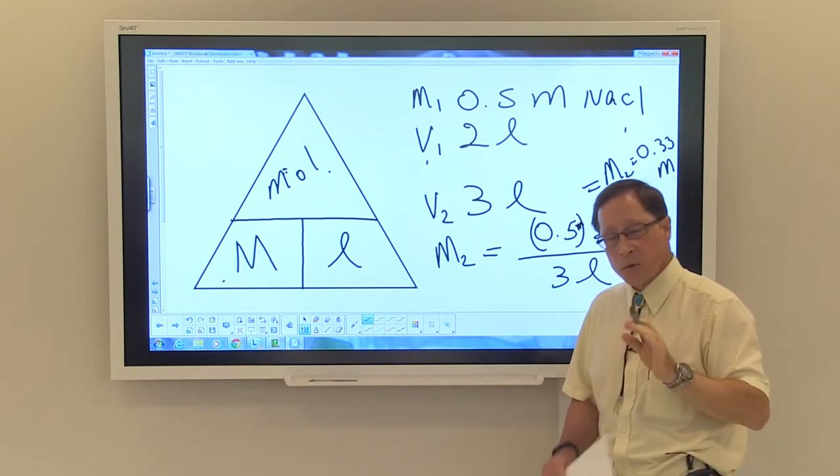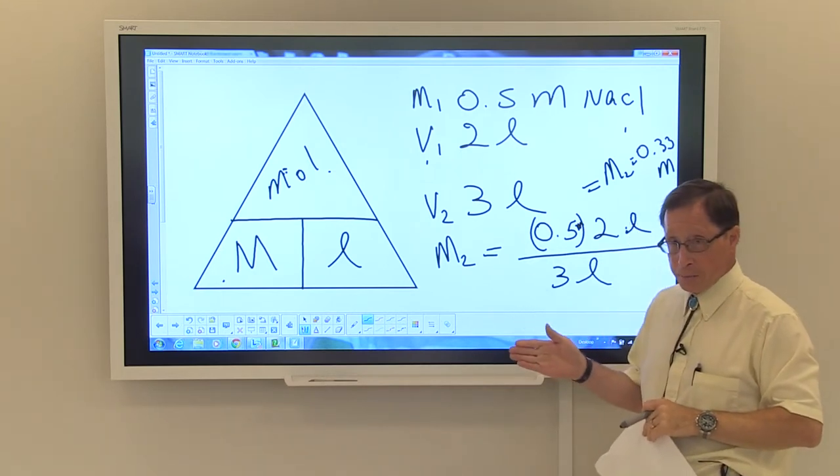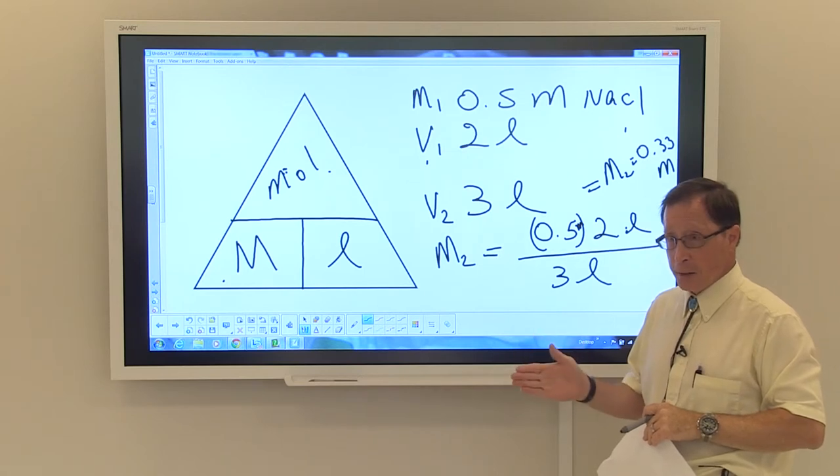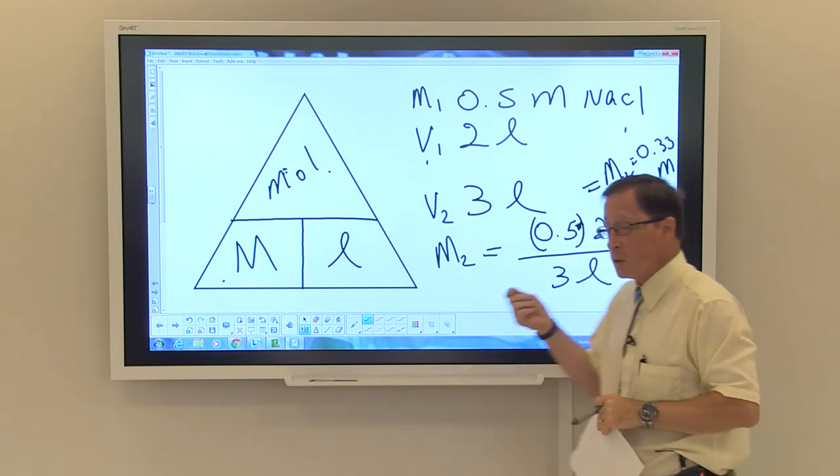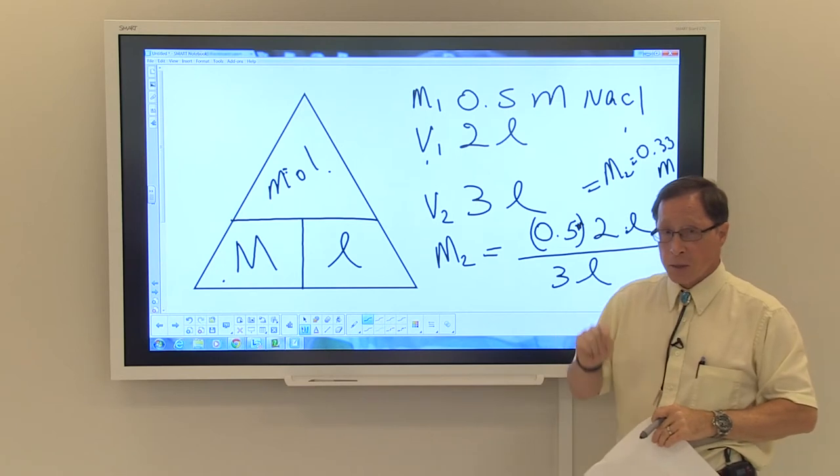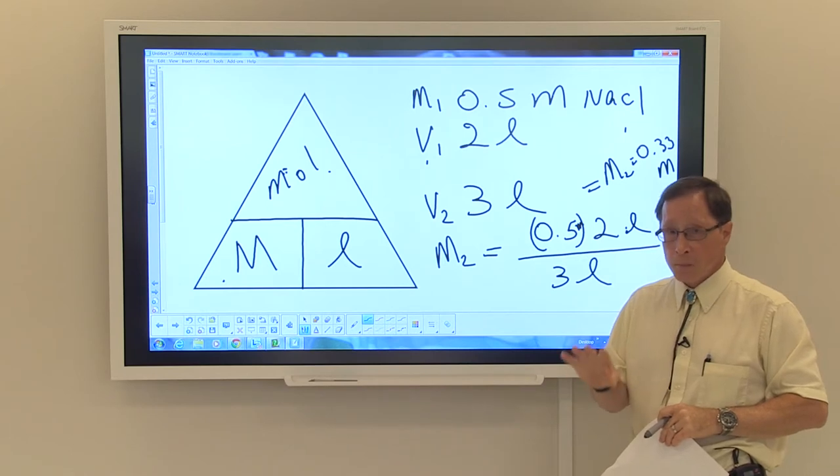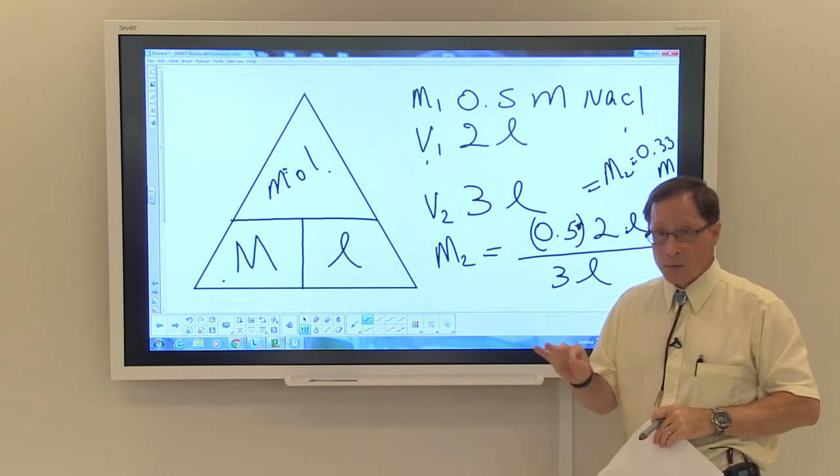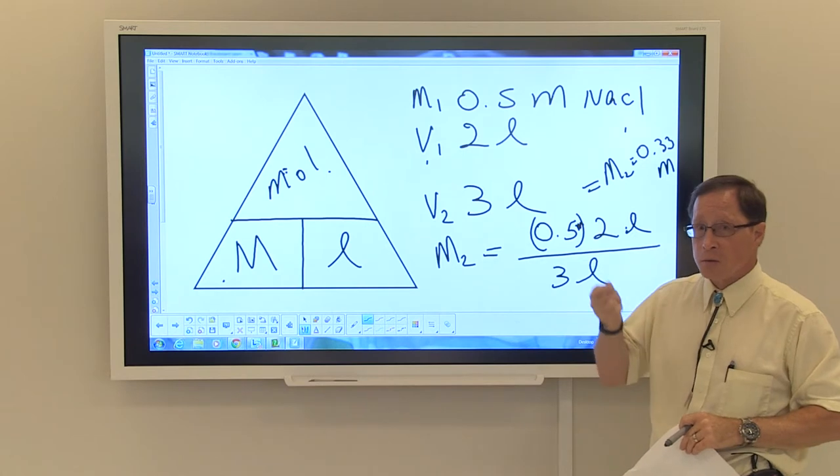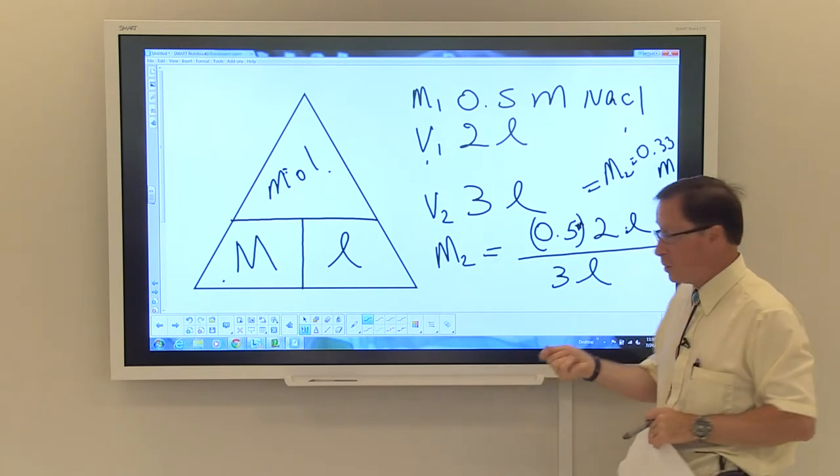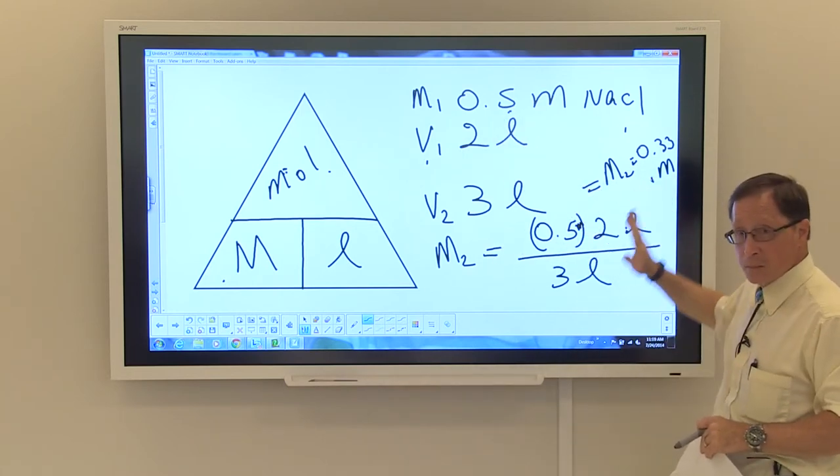Now, I want you to be sure that you understand this. The original solution that we had contained one mole of the sodium chloride. Diluting it to three liters did not change the quantity of the original solute. We still have one mole of that solute. We have one mole of the solute, sodium chloride. We have increased the volume, and so the concentration of that material is less. Meaning that it's gone from a half molar to 0.33 molar.